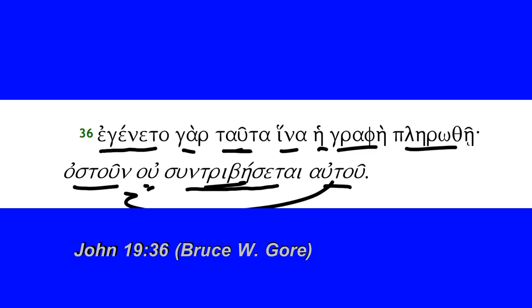Going back then to the word bone: 'a bone of him will not be broken.' In the Old Testament, the Passover lamb was not to be mutilated in that way — a bone was not to be broken. And Psalm 34 makes a reference to a bone not being broken. That seems to be what John has in mind as he notes, as an eyewitness, the events that are transpiring here.